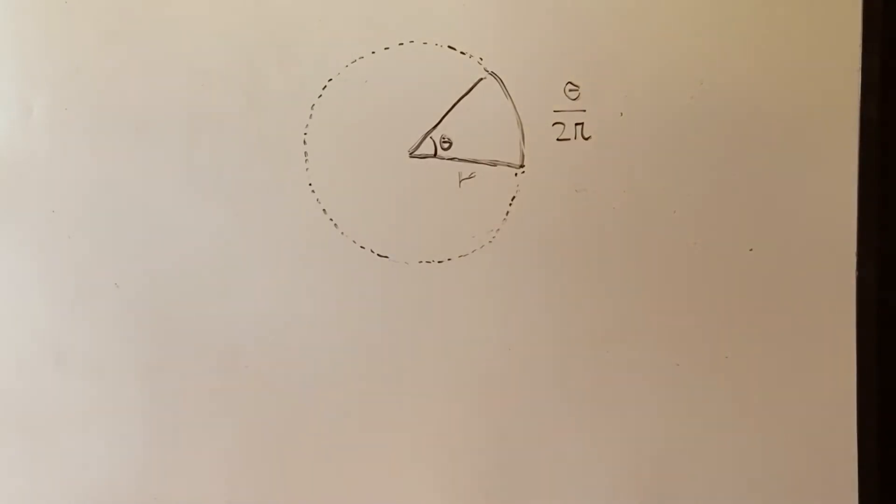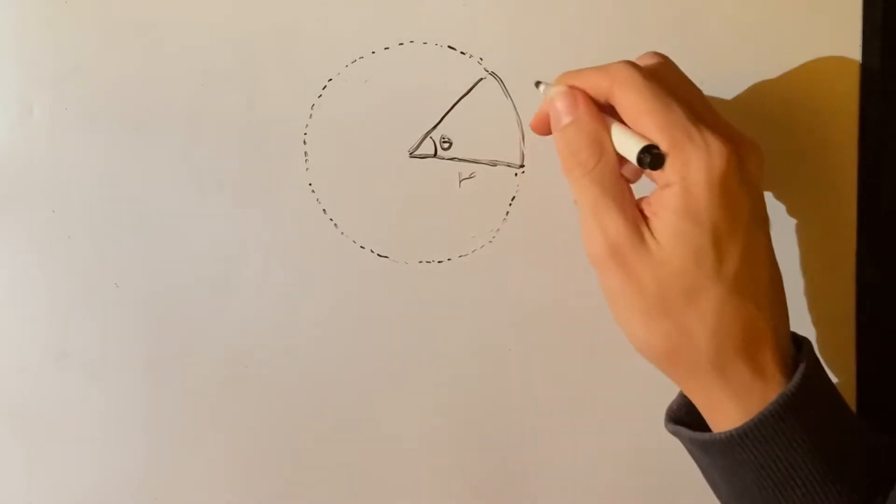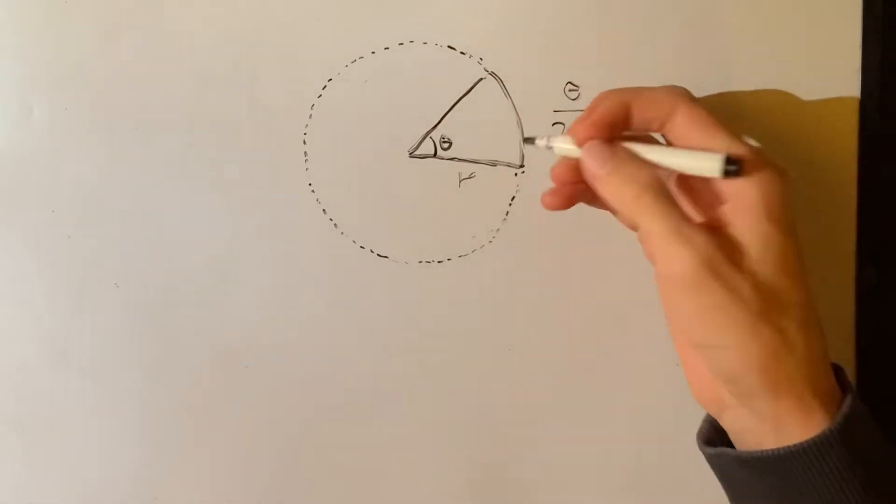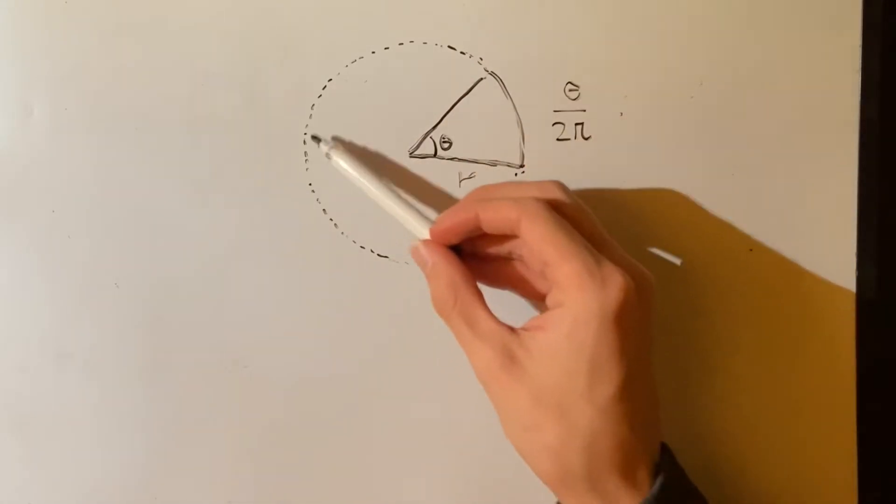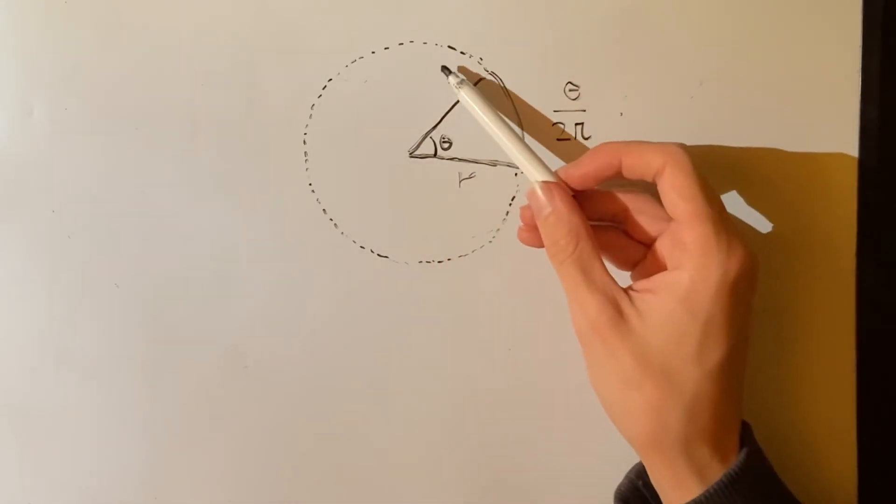We will multiply this ratio by the area of the full circle. So let's say if you had a circle of area 1, if you take 50% of it, the area will be 0.5.